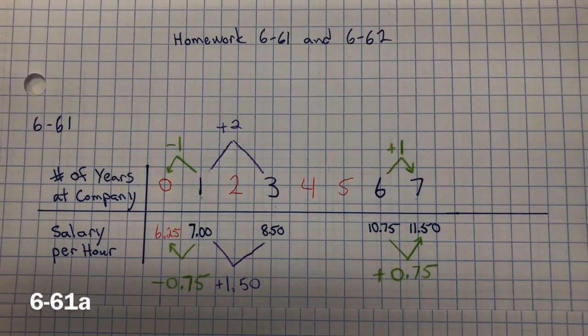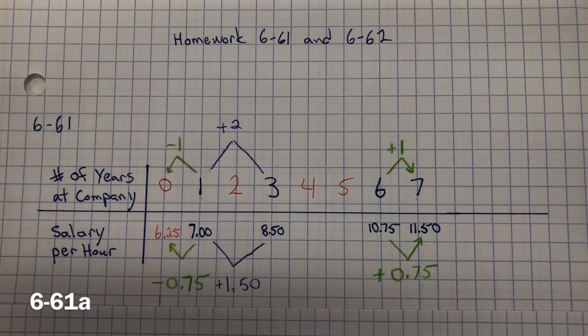This is the homework for 6-61 and 6-62. In 6-61a, use Hector's data to estimate how much he makes, assuming he has worked at the company for 12 years.